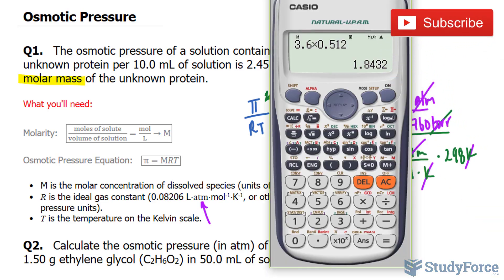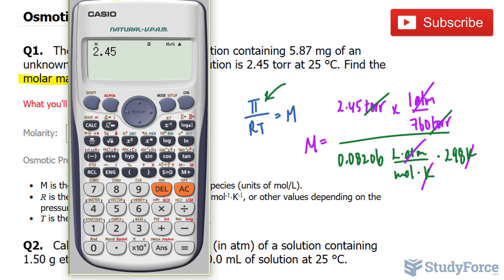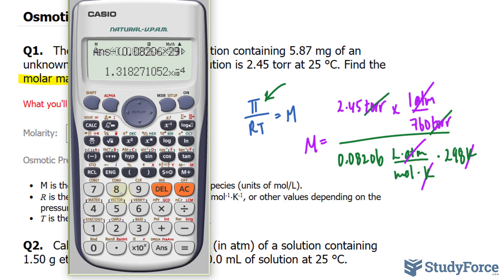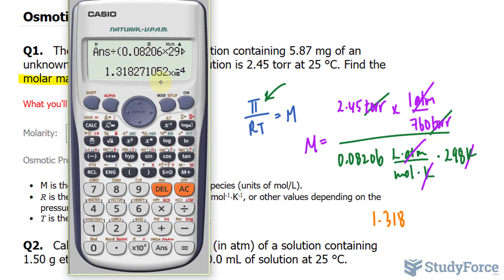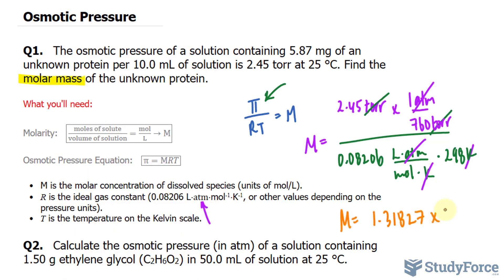Using our calculator, 2.45 divided by 760, you should end up with a number that looks like this, divided by everything at the bottom: 0.08206 multiply it to 298. So I'll record this number, 1.318, and I'll record a few more digits just to prevent any rounding errors, multiply it to 10 to the power of negative 4 moles per liter.